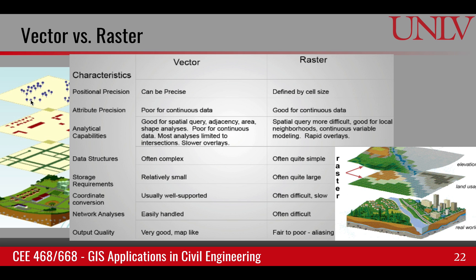Looking at the vector features — point, polygon, and polyline — and on the other side we have the raster or the matrix. If we look at one single feature's positional precision, vector is much more accurate. If we are looking at points or the boundary of a certain region, you can be very accurate in how you define that. Whereas in raster, this precision is very much dependent upon the size of the grid cell.